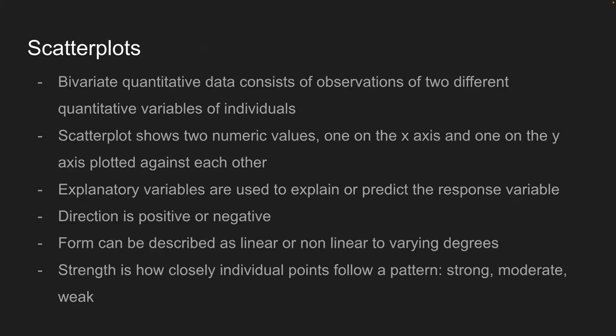Scatter plots: bivariate quantitative data consists of observations from two different quantitative variables. The scatter plot shows the two numerical values plotted against each other — one on the x-axis and one on the y-axis. The explanatory variable is usually on the x-axis and is used to predict the response variable. From the scatter plot, you can identify the direction (positive or negative slope), the form (linear, non-linear, quadratic), and the strength — how closely individuals follow the pattern.